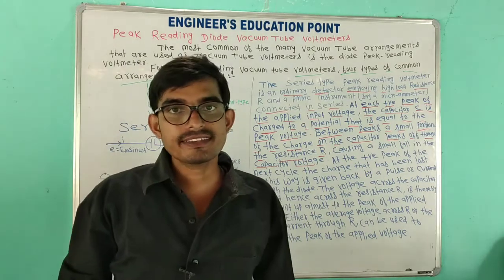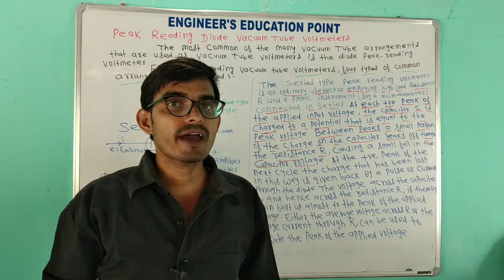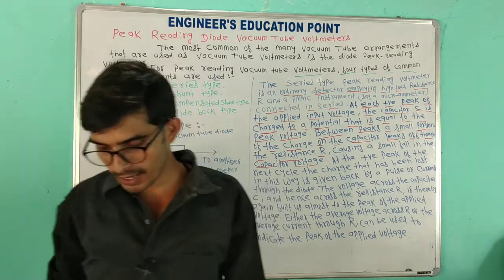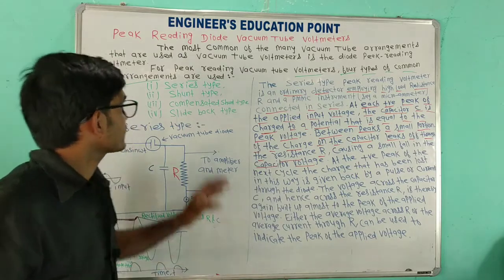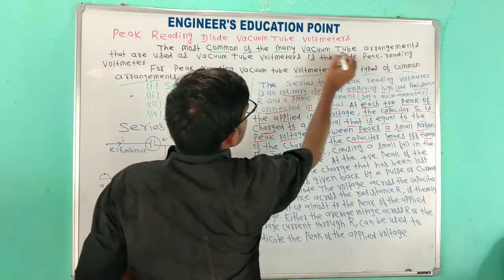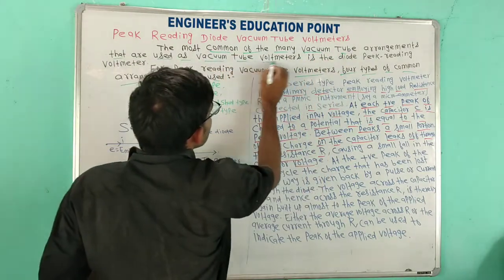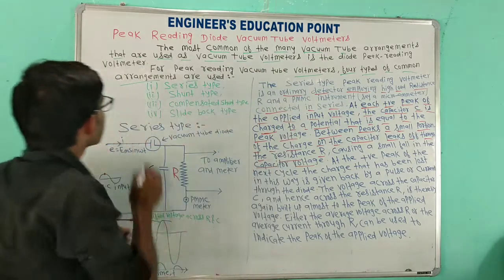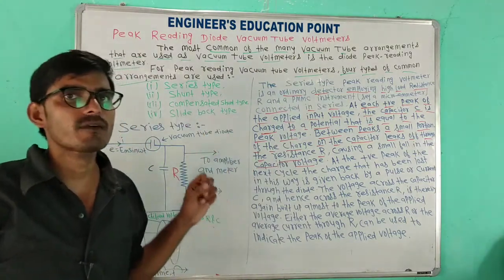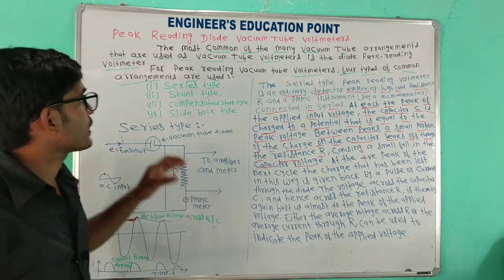Hello everyone. In this lecture we are going to learn about the peak reading diode vacuum tube voltmeter. The most common of the many vacuum tube arrangements used as a vacuum tube voltmeter is the diode peak reading voltmeter.